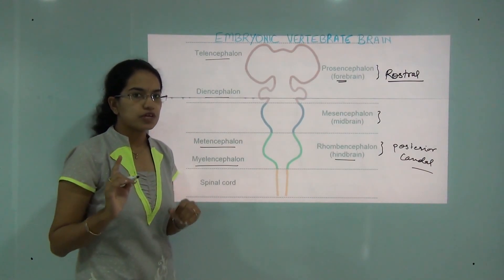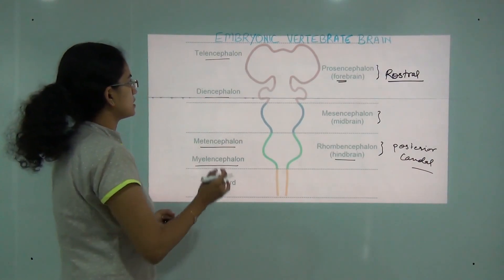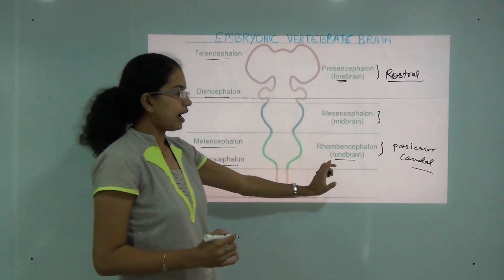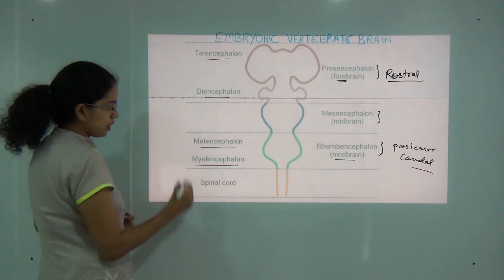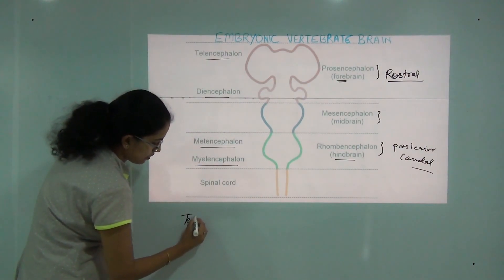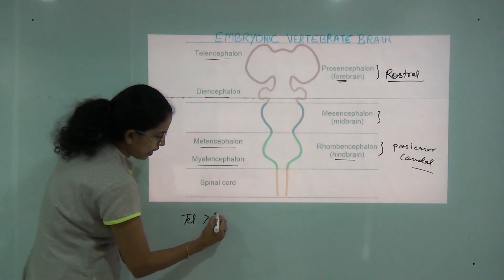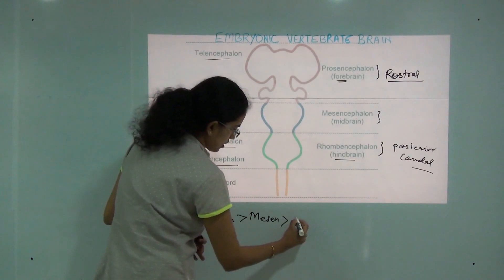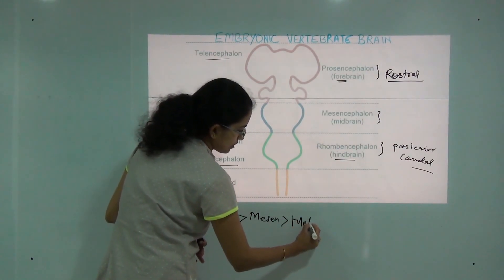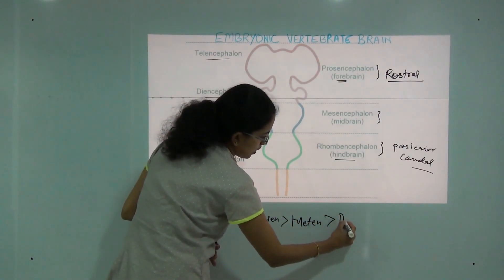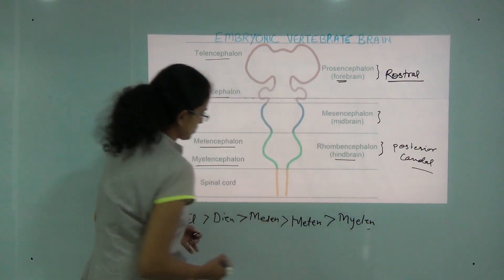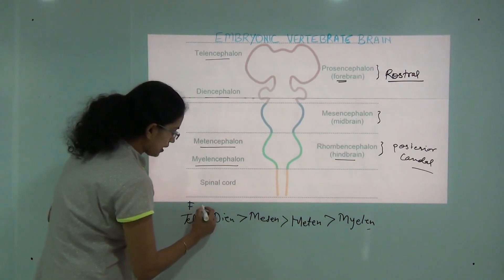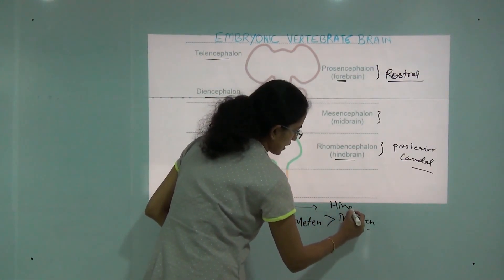This is one of the very important questions asked in most competitive examinations — the correct order from forebrain to hindbrain. The series goes: telencephalon, then diencephalon, then mesencephalon (the midbrain), then metencephalon, and finally myelencephalon. This is the correct order from forebrain towards the hindbrain.